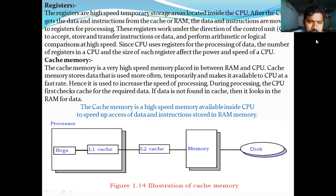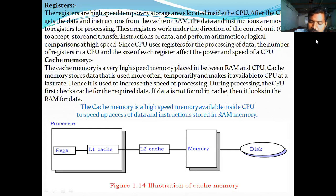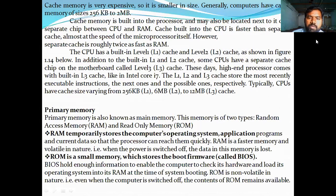In the slide diagram, there is an illustration of how cache memory works. REGS is nothing but a register. We have Register, L1 cache memory, L2 cache memory, memory, and disk. This shows how the processor accesses data from cache memory. L1 is Level 1 cache memory, L2 is Level 2 cache memory, and there is also Level 3.